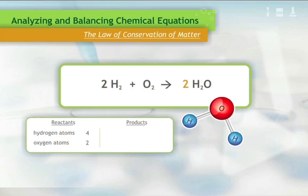On the right side, there are two molecules of water, each containing two atoms of hydrogen for a total of four hydrogen atoms. There is one atom of oxygen in each molecule of water on the right side for a total of two oxygen atoms.